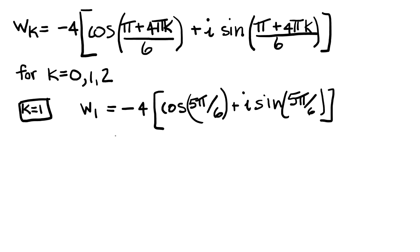I'm going to get quite a similar result here. This is going to be -4 times -√3/2, because 5π/6 of course is in quadrant 2, plus i times positive 1/2.